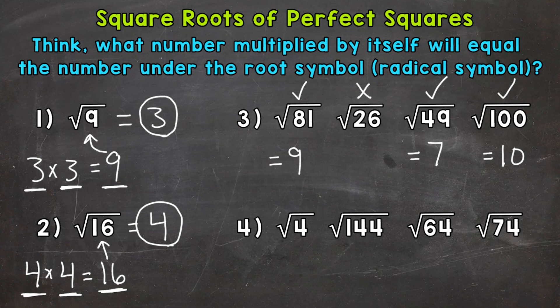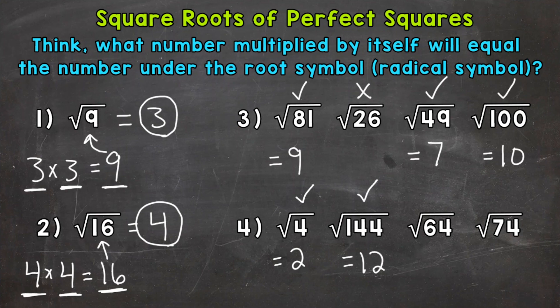Number 4 — we start with the square root of 4. Is there anything that multiplies by itself to equal 4? Yes, 2 times 2 equals 4, so the square root of 4 equals 2, and this is a perfect square. Now we have the square root of 144. 12 times 12 equals 144, so the square root of 144 equals 12, and it is a perfect square.